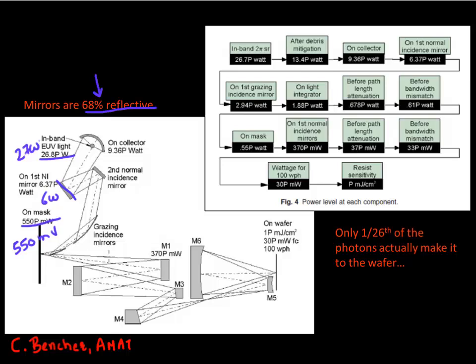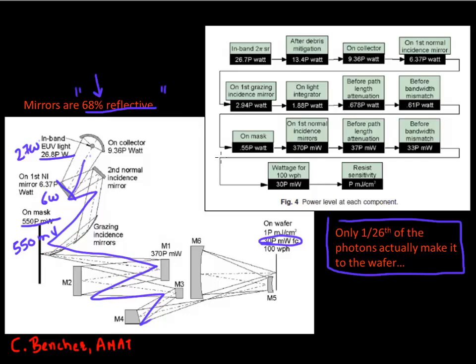And by the time you focus it and get to your wafer, you're left with just 30 milliwatt. So for each of these photons, only 1 by 26 of them actually make it to the wafer. The rest are just lost in these optical paths because each of these mirrors has a reflectivity only of 70%.